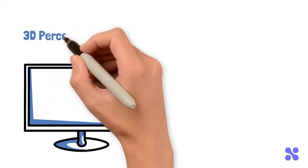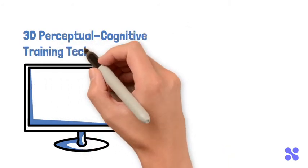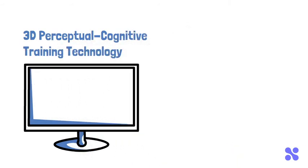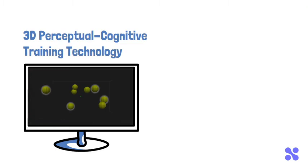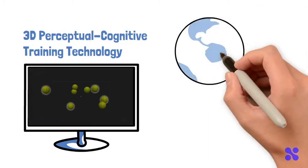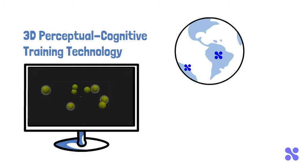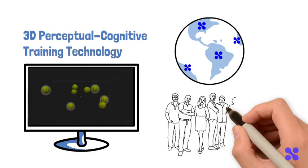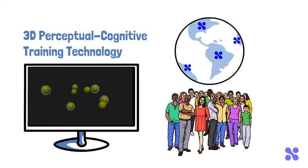To quickly introduce the technology, Neurotracker is a 3D perceptual cognitive training tool that has been designed from over three decades of research at the University of Montreal in Canada. It is used by thousands of people from all over the world who are looking to enhance their mental performance, awareness, and focus.